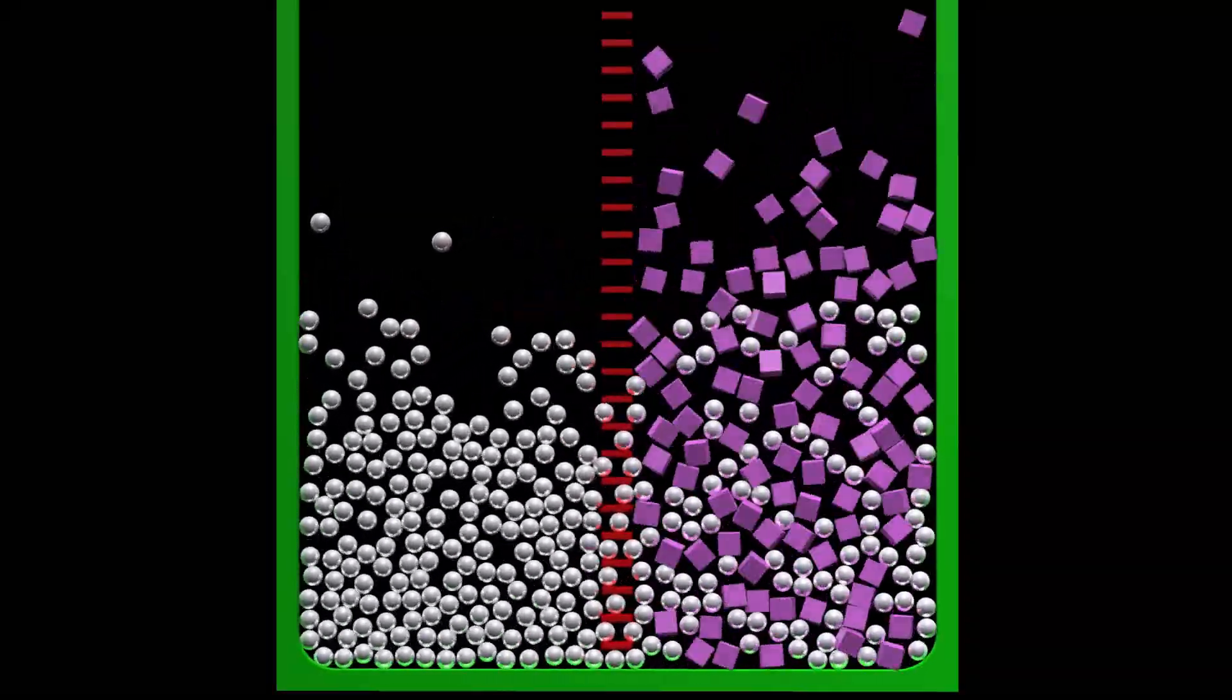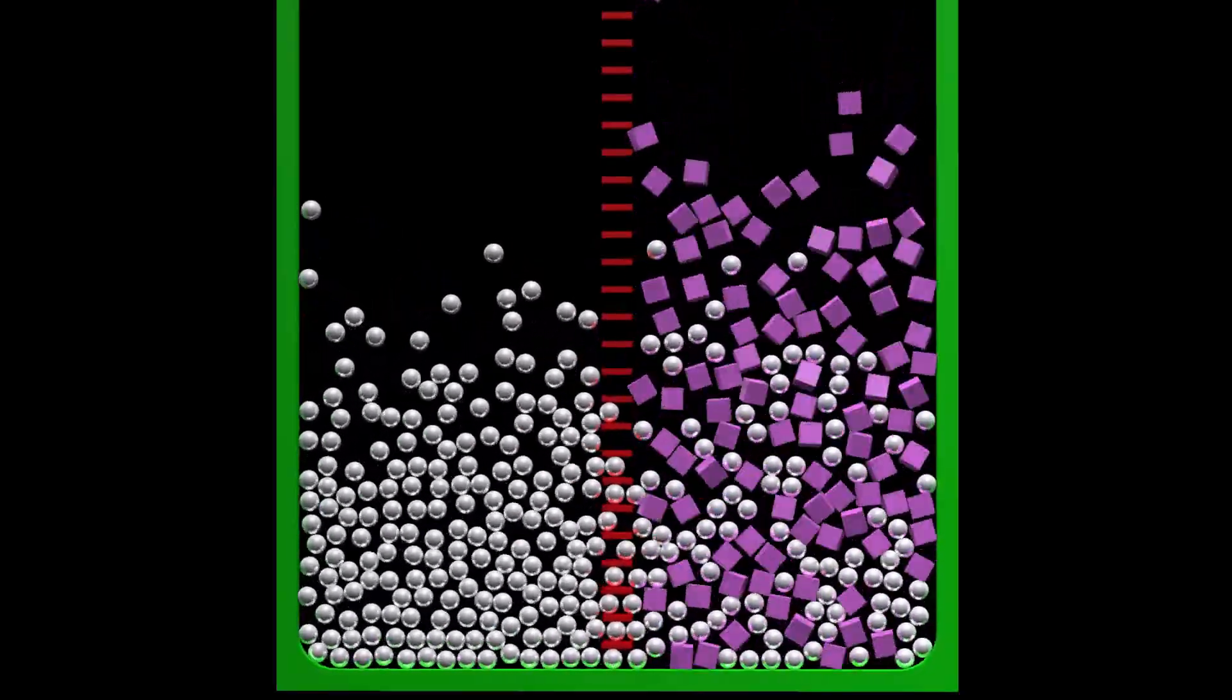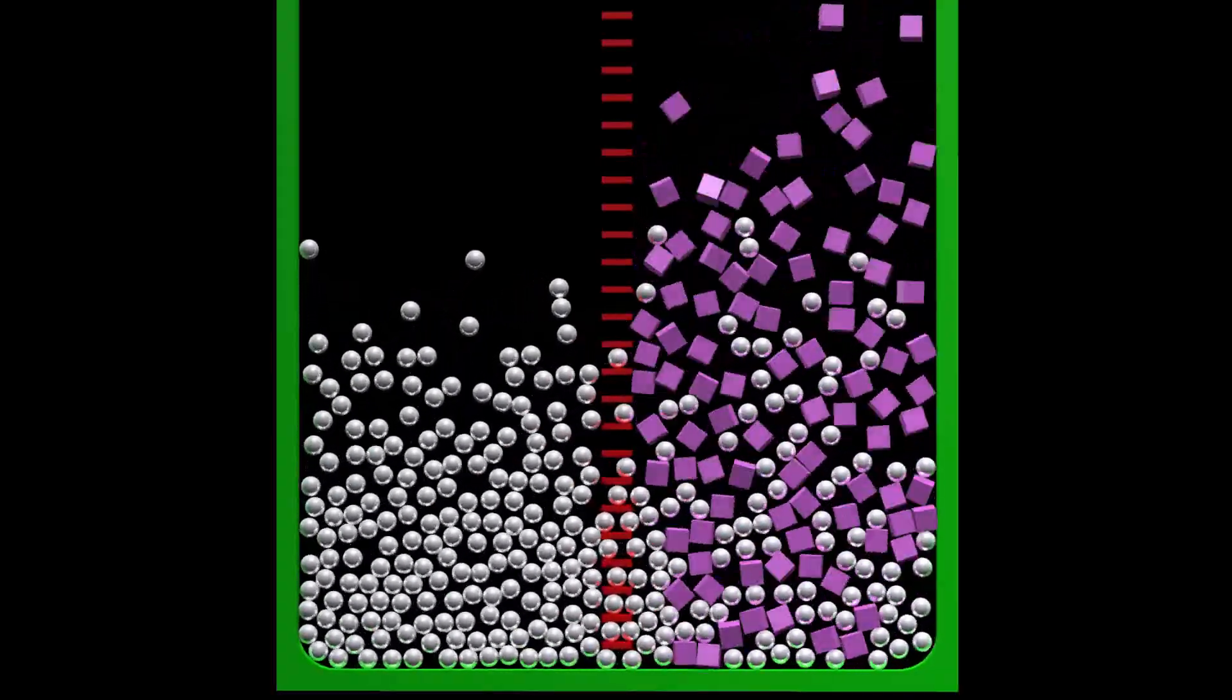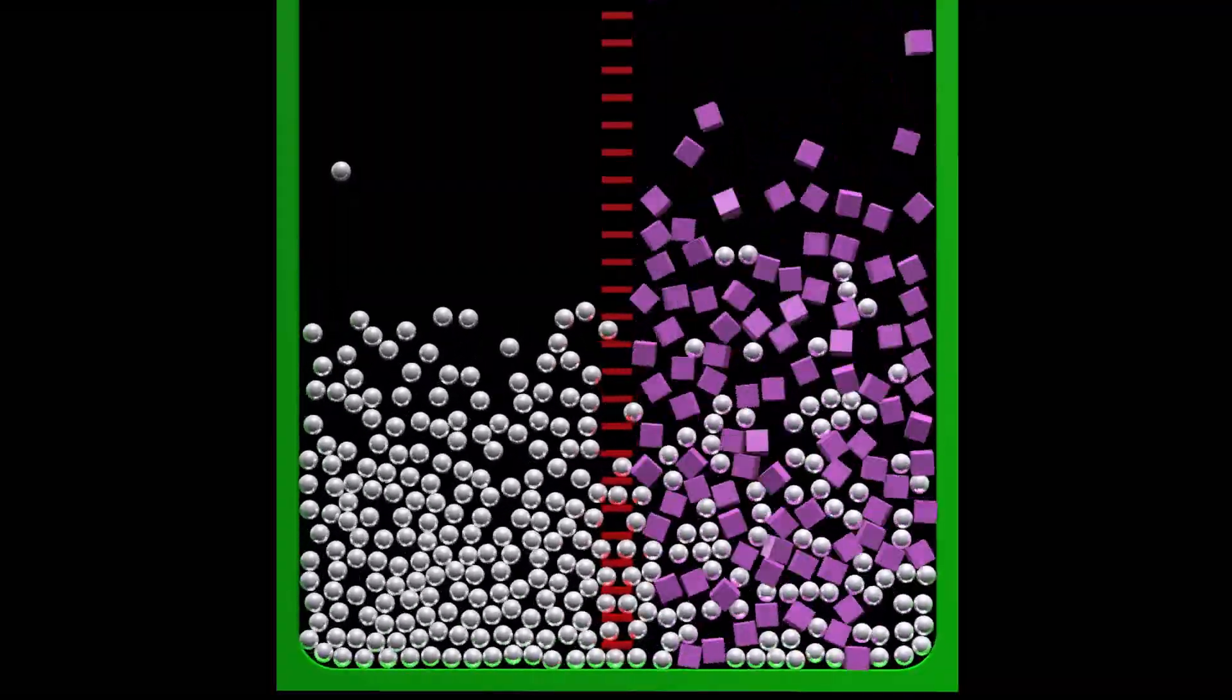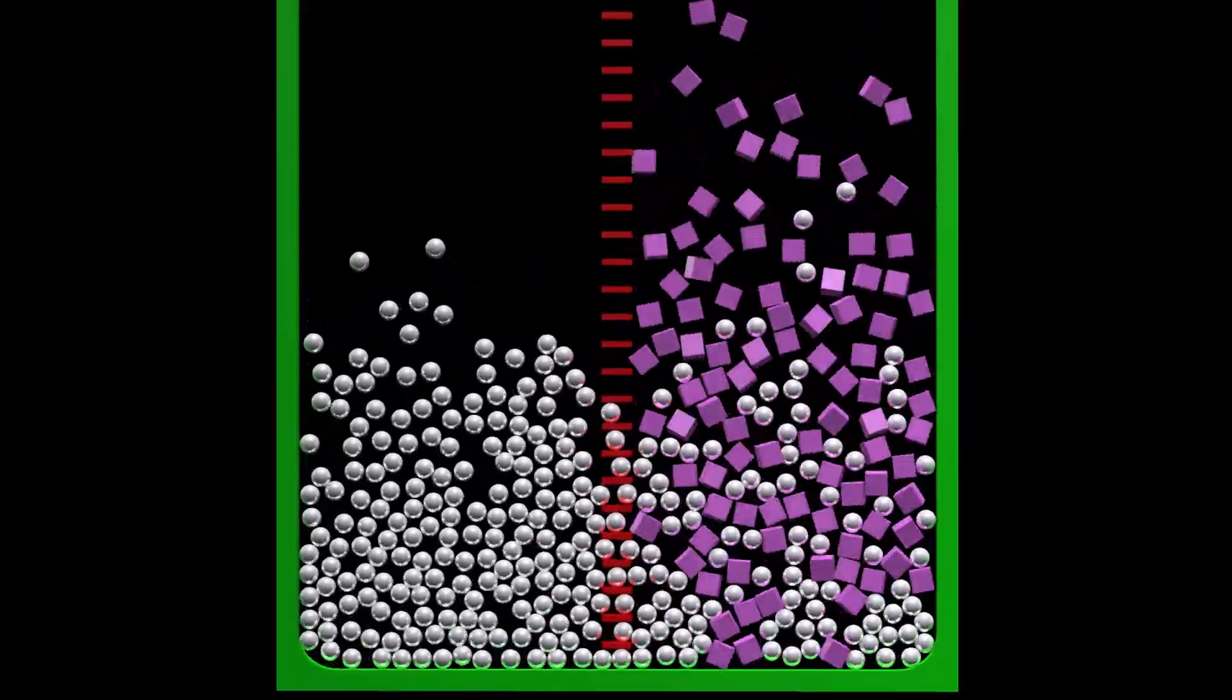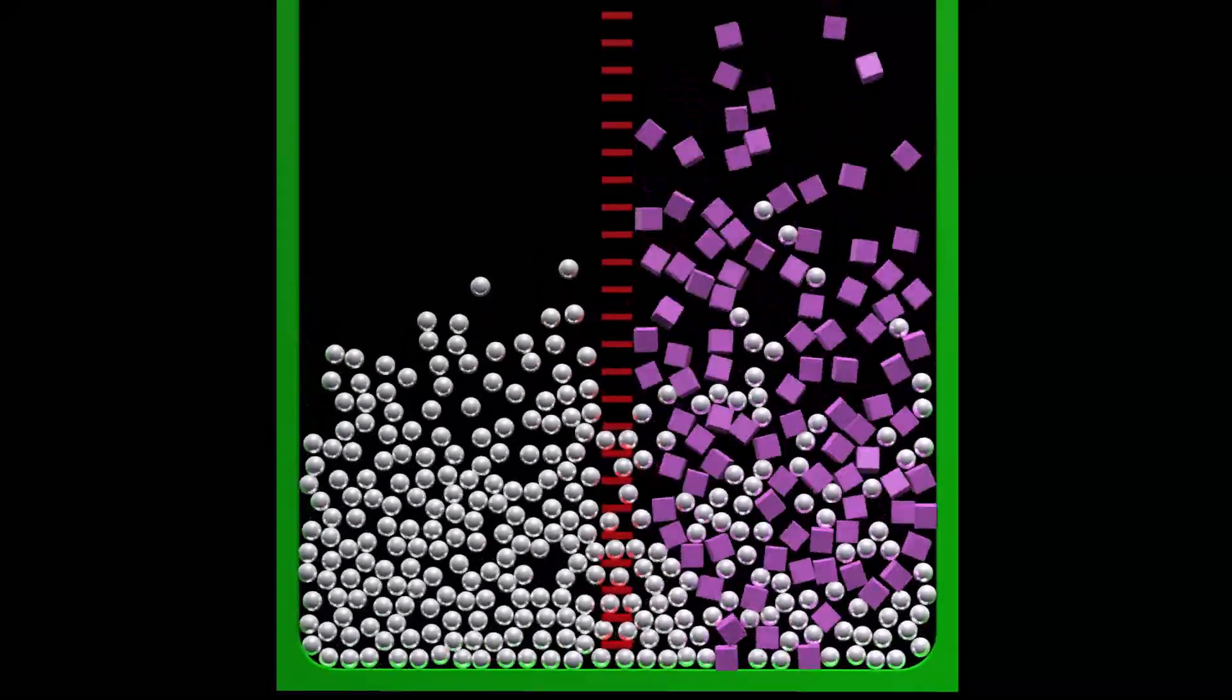This behavior can also be observed with real fluids in a laboratory. For example, the balls might represent water molecules, and the squares might represent dissolved salt ions. The barrier would be a semi-permeable membrane that only allows water molecules to pass through.